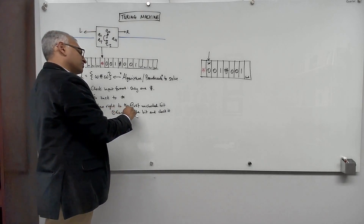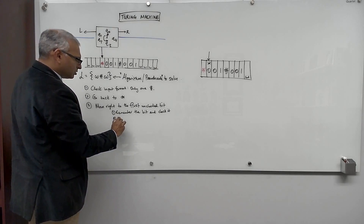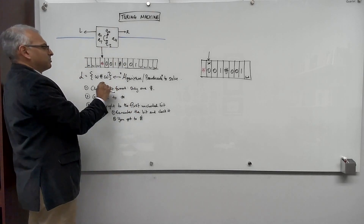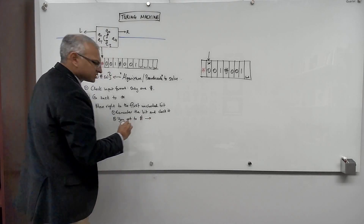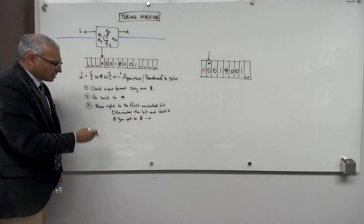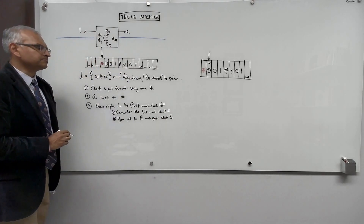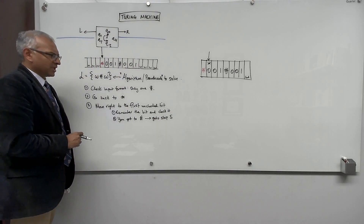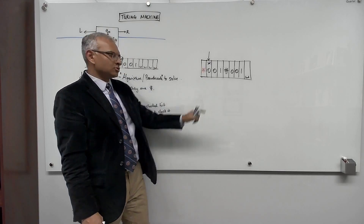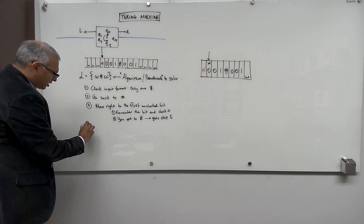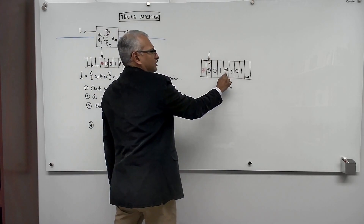Now, it's possible that when you're moving right to the first unchecked bit, there are no unchecked bits — you get to pound. For example, if W is empty, so there are no unchecked bits, you get to pound right from the very beginning. In which case, go to step five. So let's summarize what we have so far. We've gone right, we've come to an unchecked bit, we've checked it. We've remembered the bit and we've checked it. And we're moving on now to step four, which says: go and verify that that bit is on the other side as well, on the other string. So move right until you pass the pound.